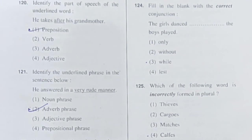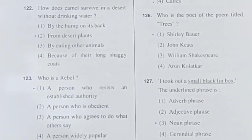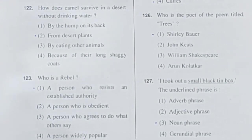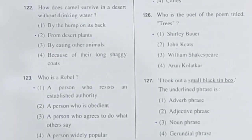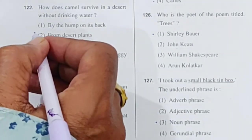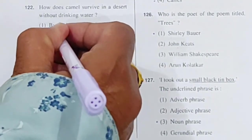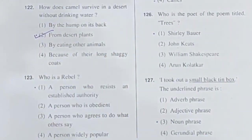Question 122: How does a camel survive in a desert without drinking water? The correct answer is: from desert plants. Option 2 is correct.